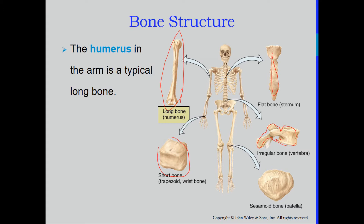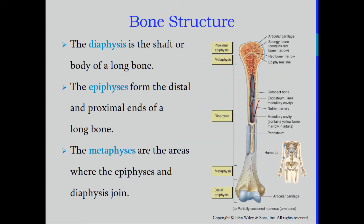There are some key features of the long bone we need to discuss. First, the section called the diaphysis — this is the shaft or the middle part of the bone. We can see in this diagram that the diaphysis runs from about here down to about this region — that is the middle section of the bone.